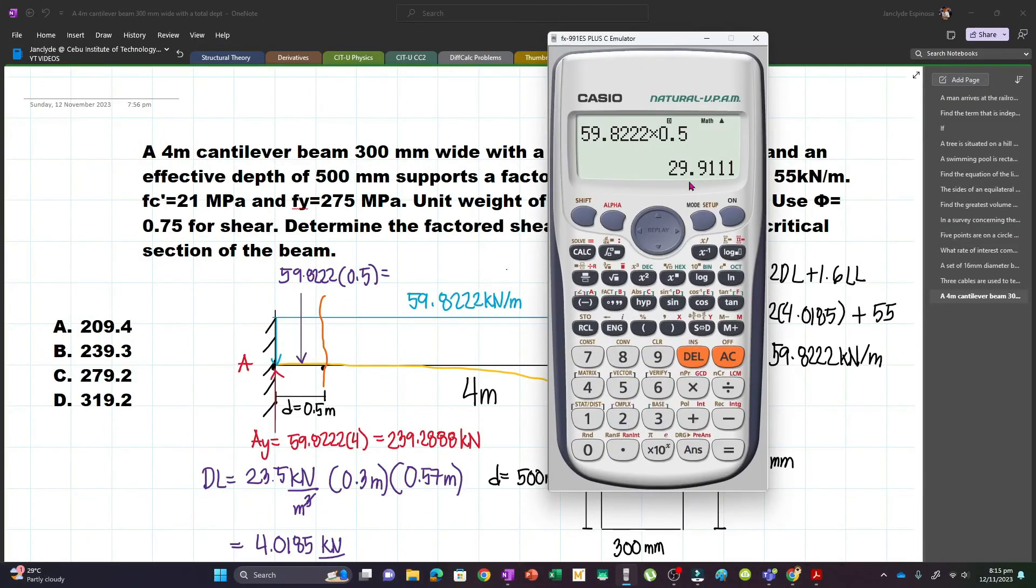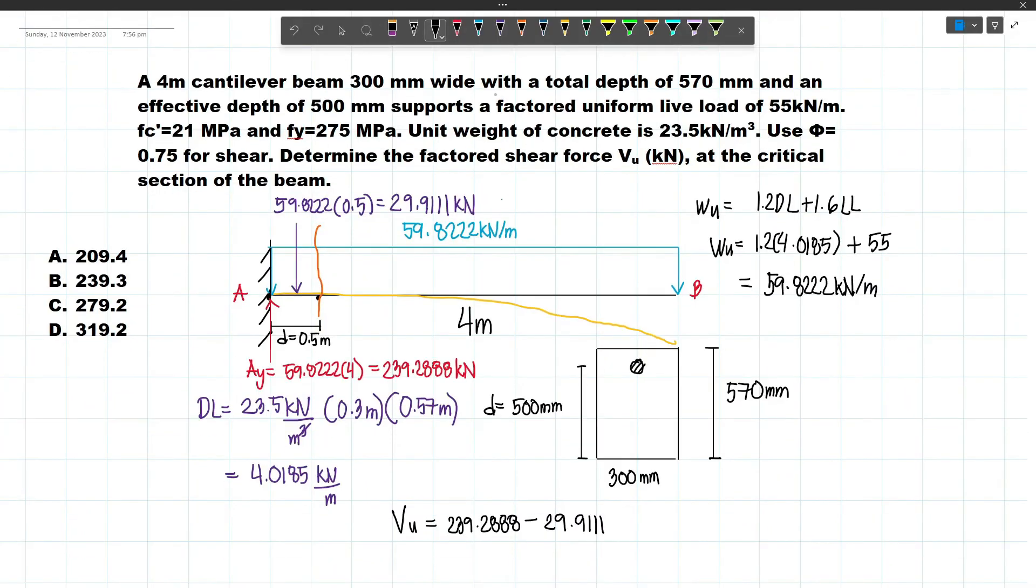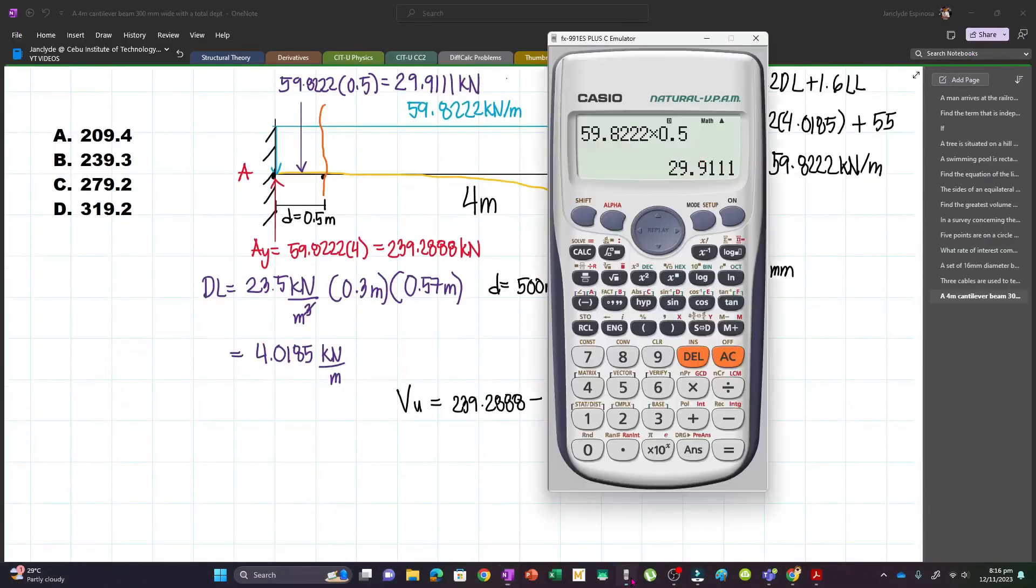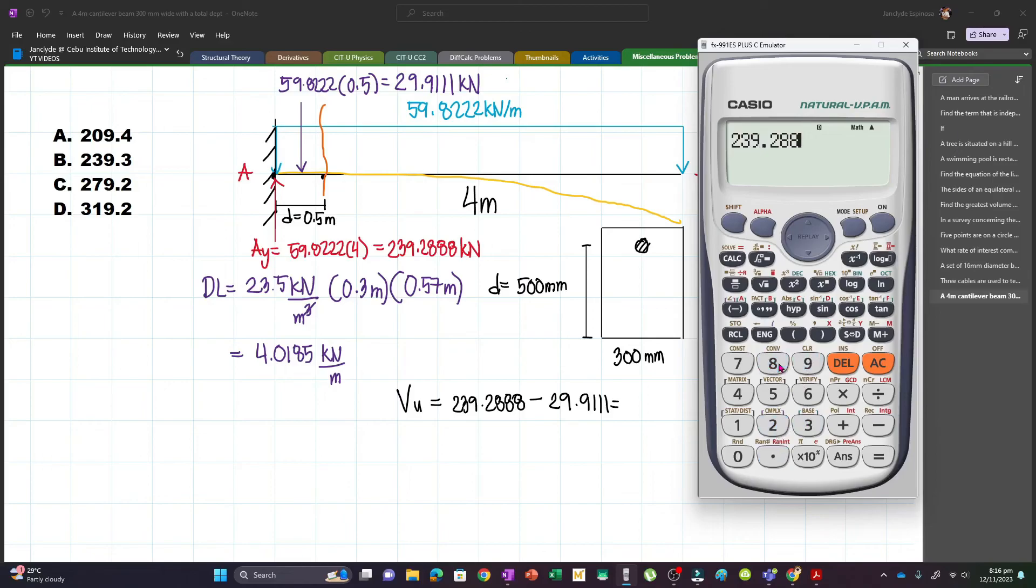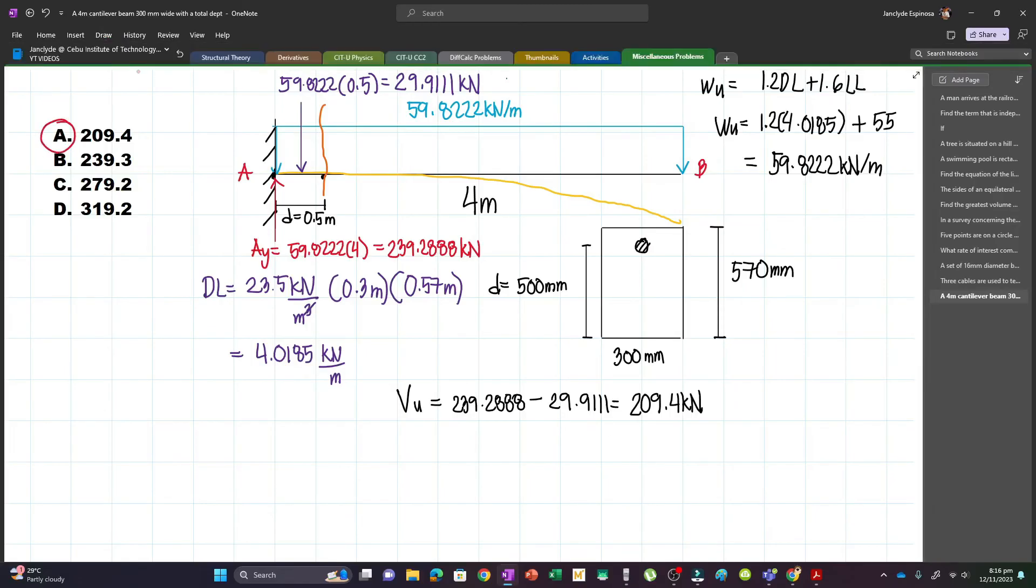This will be 29.9111. Let's subtract that. VU becomes 239.2888 minus 29.9111, which gives us a value of 209.4. This will be our answer.